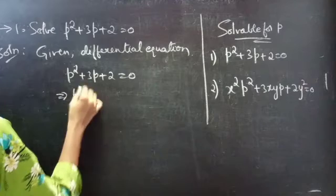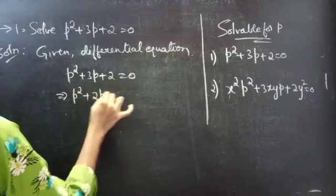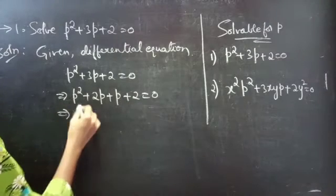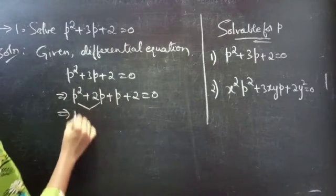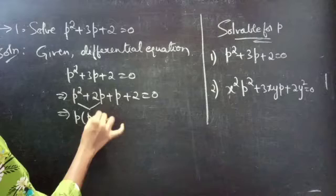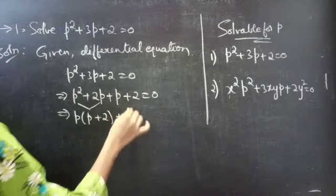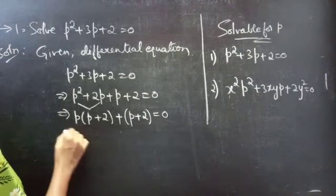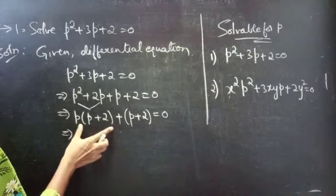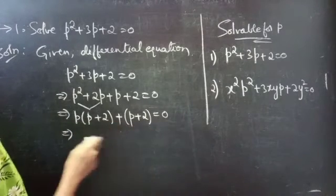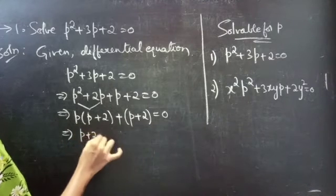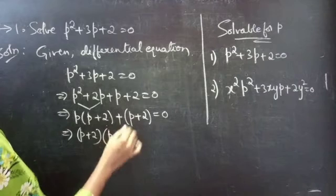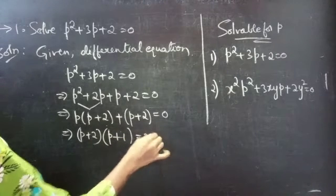We can split 3P as 2P plus P, keeping the third term as it is. Then take P common from the first two terms — you get P times (P plus 2) — and write the next two terms as they are. Since (P plus 2) appears in both terms, take (P plus 2) as a common factor, giving you (P plus 2)(P plus 1) equals to 0.